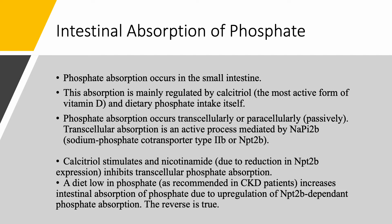Calcitriol stimulates while nicotinamide inhibits the transcellular active phosphate absorption. Nicotinamide reduces the number of NPT2B while calcitriol increases the number of NPT2B. A diet low in phosphate will increase intestinal absorption by upregulating NaPi2B-dependent phosphate absorption, and the reverse is true. So when we recommend a low-phosphate diet to a patient with CKD, even when they comply, you still need binders and dialysis, because restricting dietary phosphate actually increases intestinal absorption — a normal, logical physiologic response.